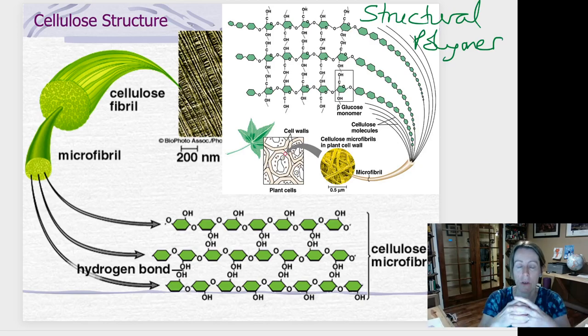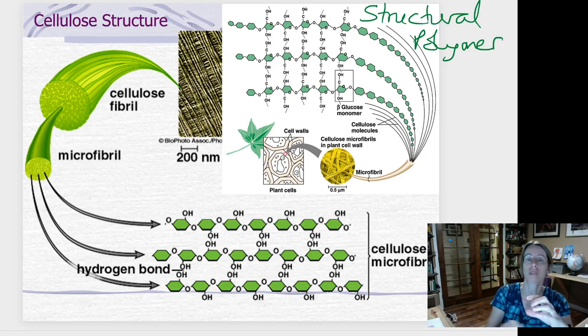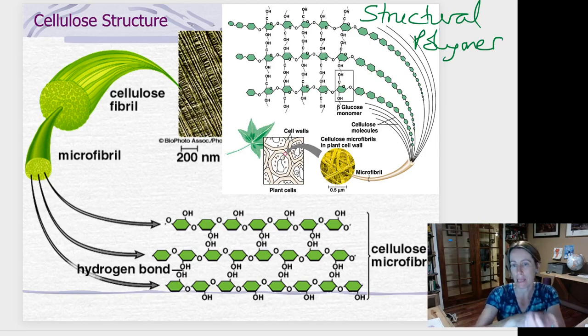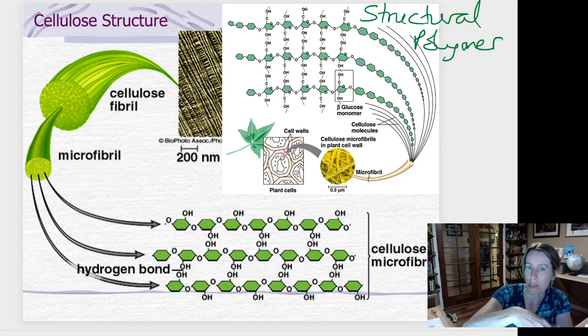Your cells do and plant cells do. But plant cells go an extra layer and they put a wall around the membrane. Animal cells don't do that. Animal cells are just like a baggie, just flopping around. But plant cells are like a baggie in a shoebox. And the shoebox is the cell wall. And the cell wall is made of cellulose.